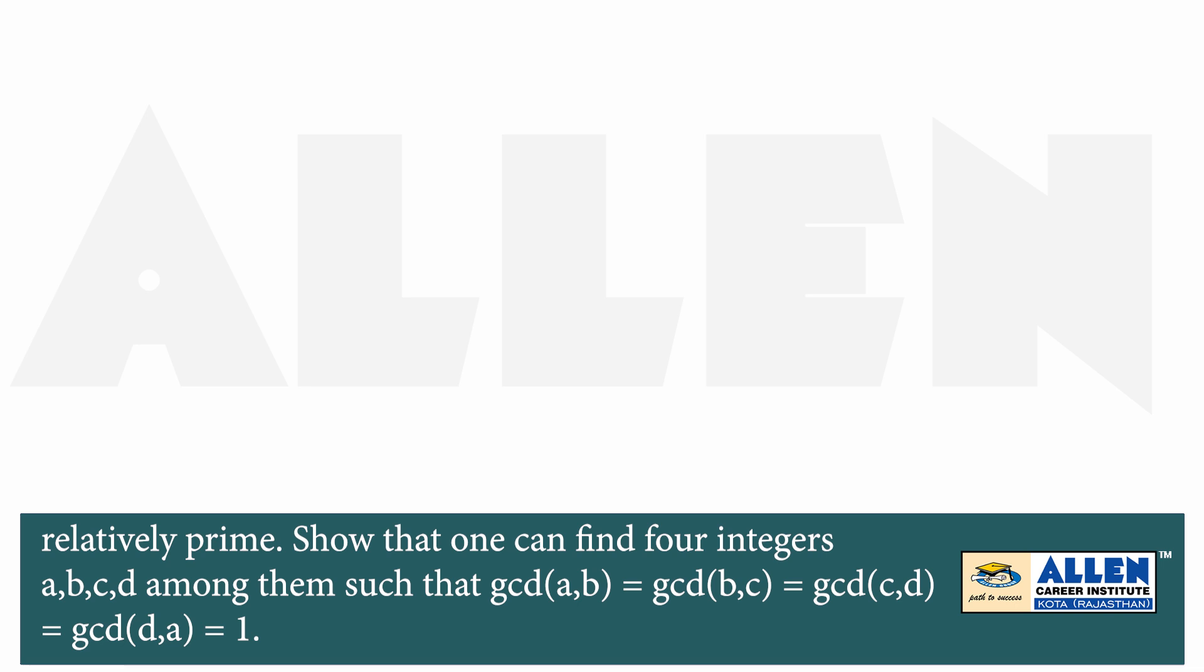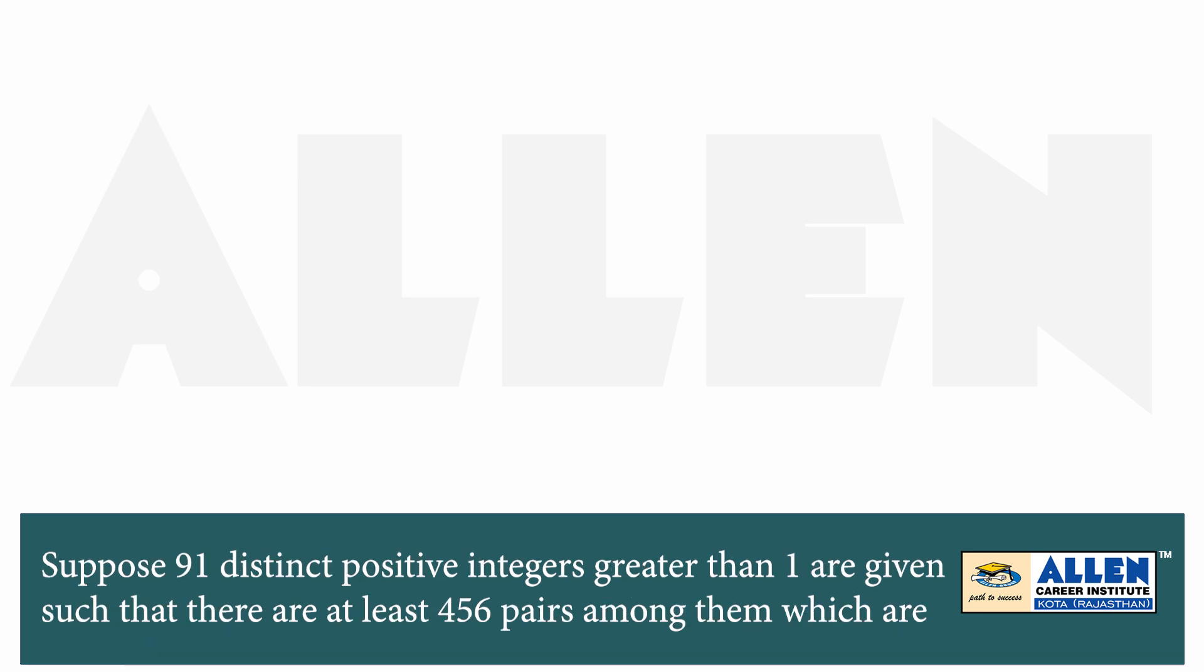Now what we need to prove in the language of graph theory? It says that we need to find 4 integers such that GCD of A, B equal to GCD of B, C equal to GCD of C, D equal to GCD of D, A.